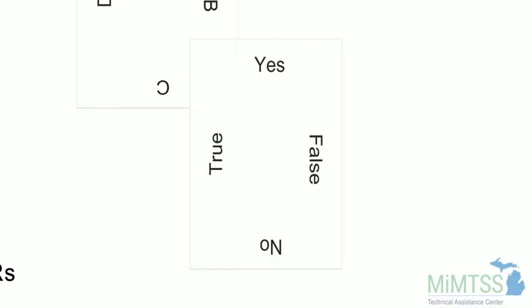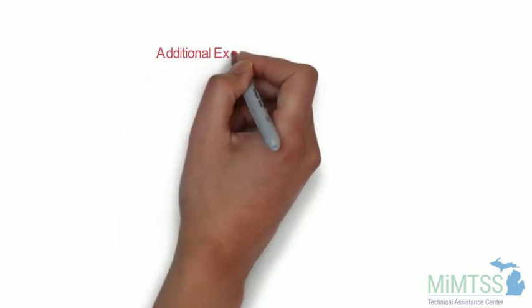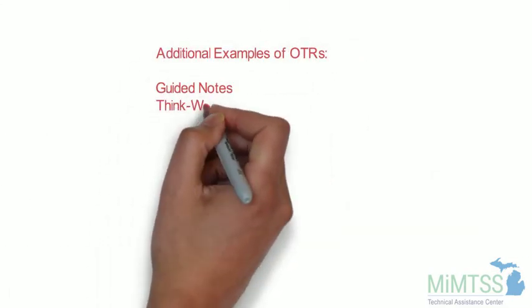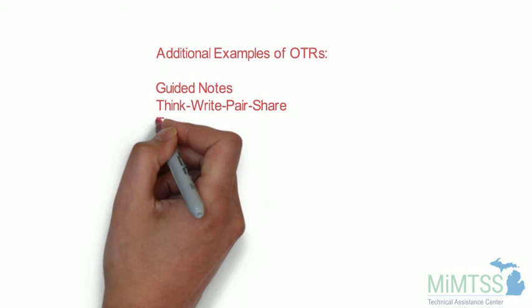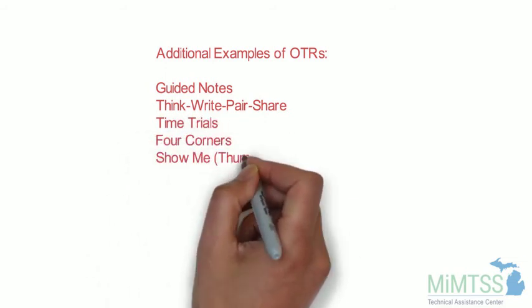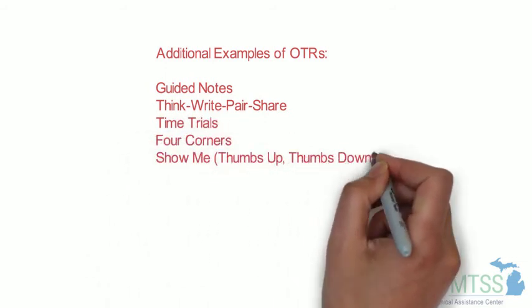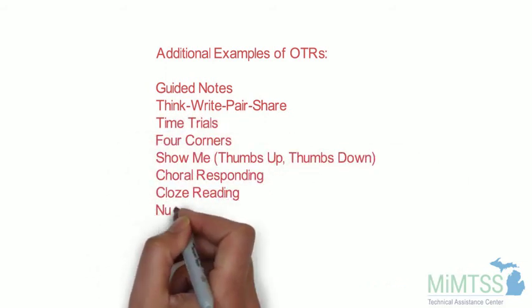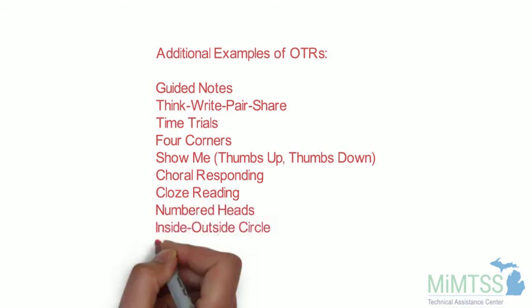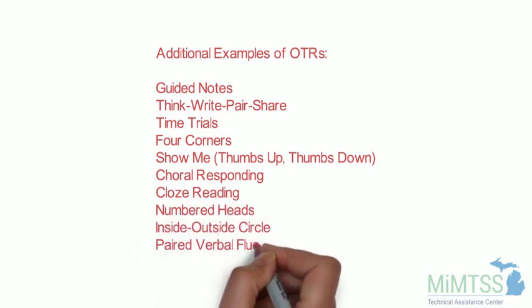The advantage of response cards over a blank dry erase board is that the time and effort to rewrite the response is eliminated and the correct answer is already available to students to select. Here is a list of additional OTR examples. It is not an exhaustive list and you probably could add more based on your own teaching. Take a moment to read through the list and think of your additional examples.